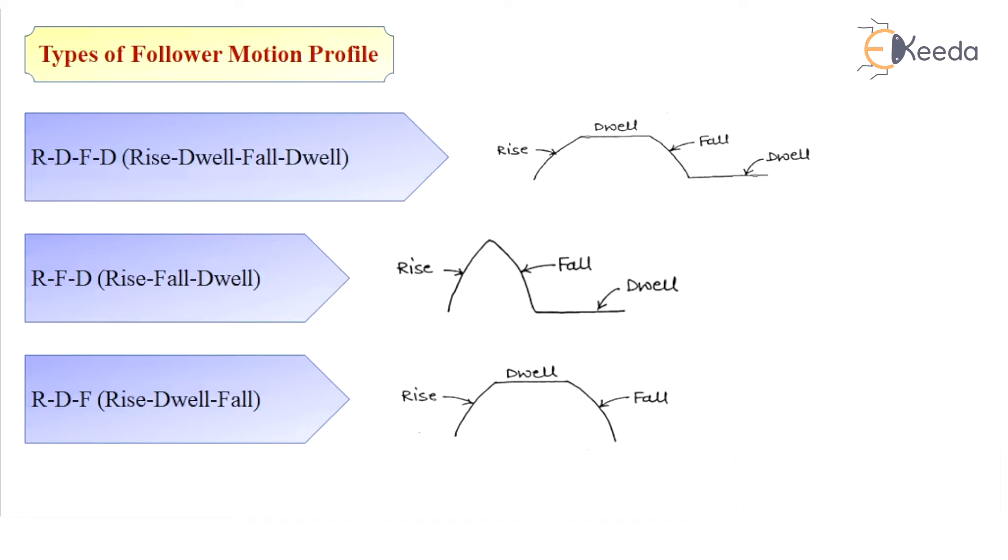The second category is RFD, stands for rise, fall, dwell. In this case, between rise and fall, there is no dwell motion as it was in the first category. So the motion here followed by the follower is rise, that means it moves upward. Next is fall, that means it will come down, and for certain degrees of cam rotation, there won't be any motion to the follower.